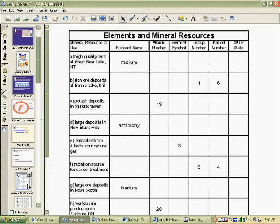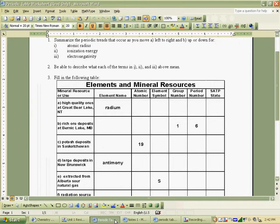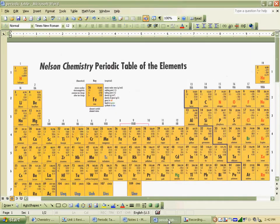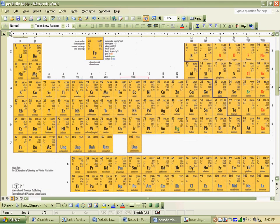Now, what I've given here for A, high quality ores in Great Bear Lake, the element name is radium, and you have to fill in the rest of it. So we'll take a look at the periodic table and try and find radium. And the periodic table is right here. Searching around for radium, and we see it's down here, number 88.